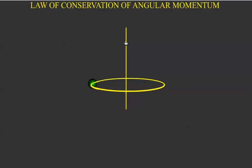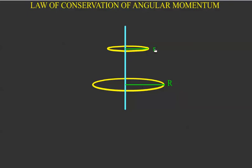This can be explained by using the law of conservation of angular momentum. Consider both positions. Here, this is the perpendicular distance of this bob from the axis of rotation. And here the perpendicular distance is smaller.